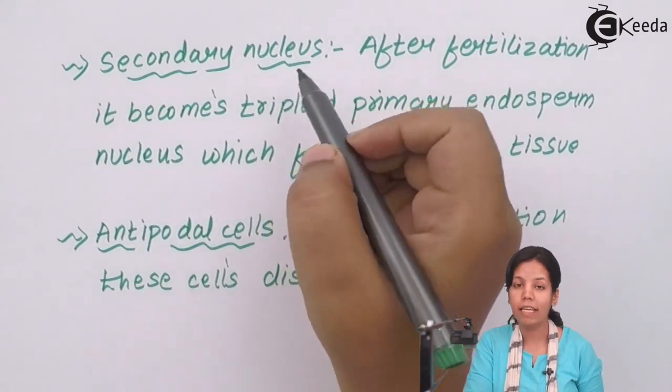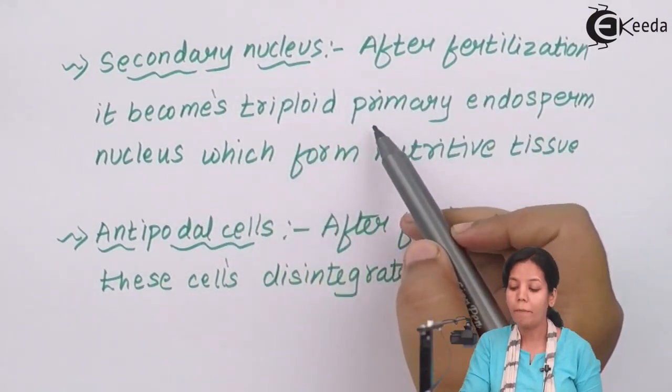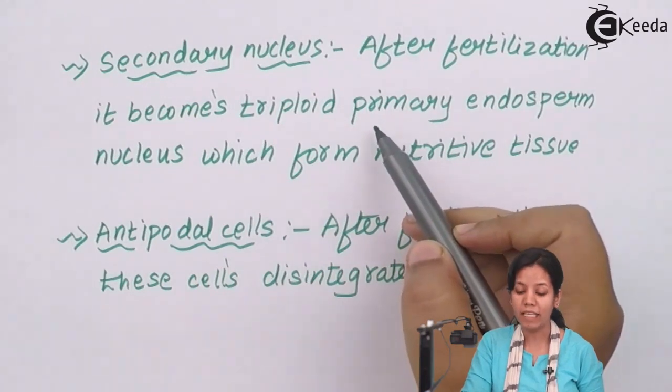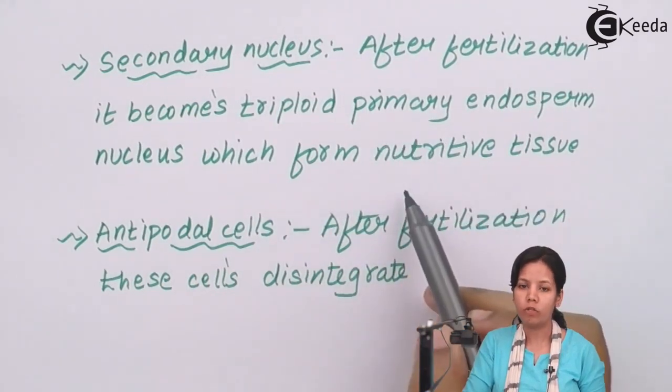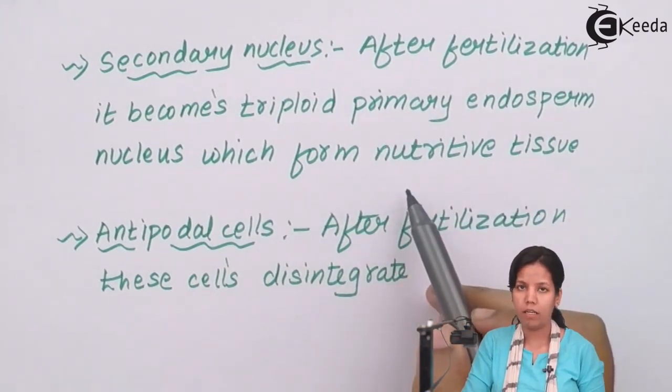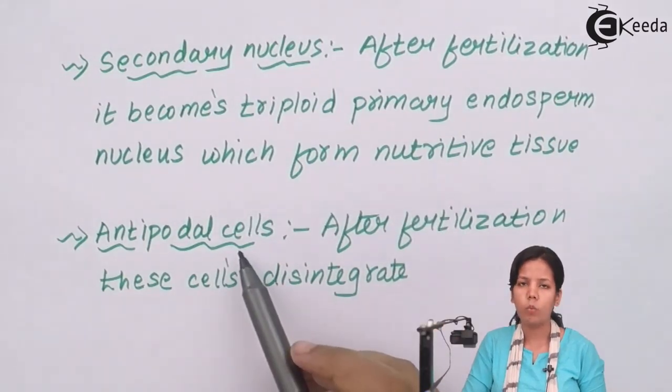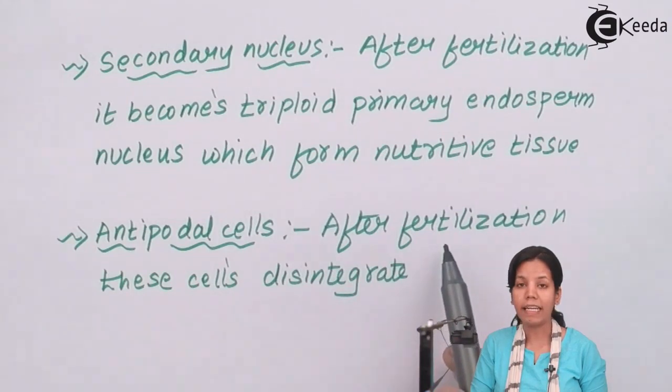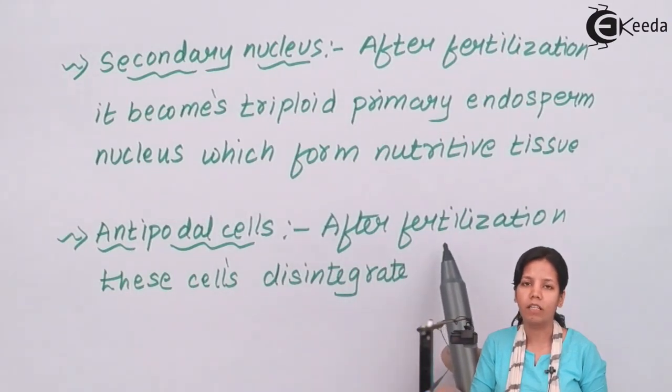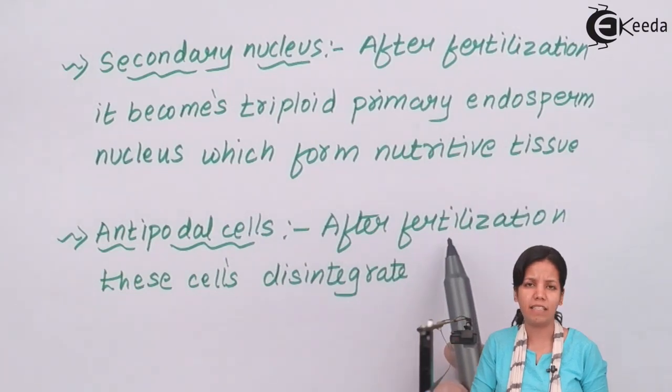Secondary nucleus forms triploid primary endosperm nucleus which forms the nutritive tissue for a growing egg cell, or after the process of fertilization it provides nutrition to the growing zygote. Antipodal cells are cells which are present in egg apparatus and these cells degenerate or disintegrate after the process of fertilization. Antipodal cells are basically accessory cells along with synergid cells.